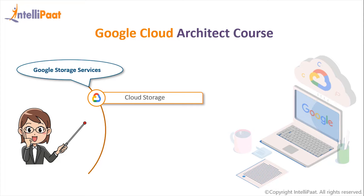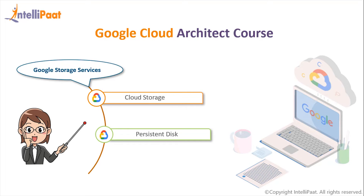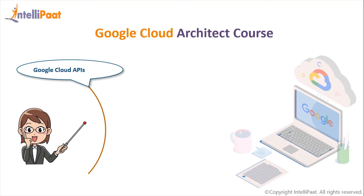Under Google Storage Services, some of the most important components are: Cloud Storage, which is highly scalable and handles unstructured data in a variety of formats such as pictures, text documents, and log files. Persistent Disk is Google's scalable block storage solution, featuring automatic encryption of data at rest and multi-reader mounting, whereby many virtual machines can share data on a single persistent disk with no degradation in performance. Cloud Filestore offers a fully managed network-attached storage service in the cloud.